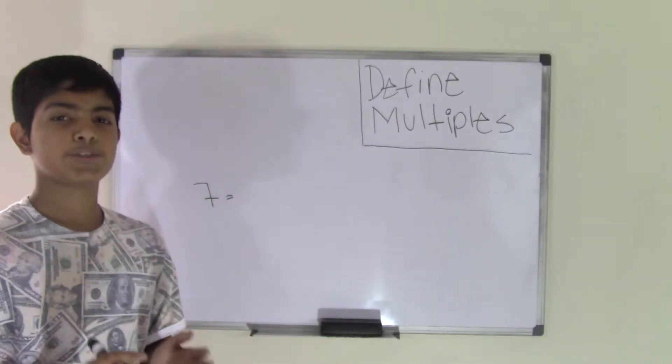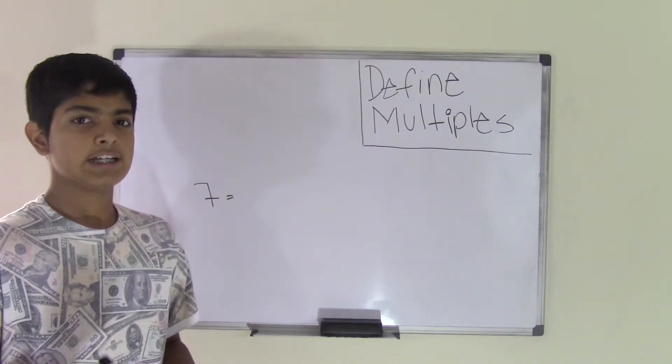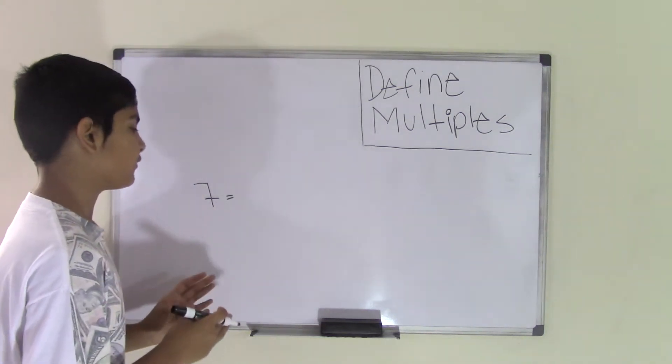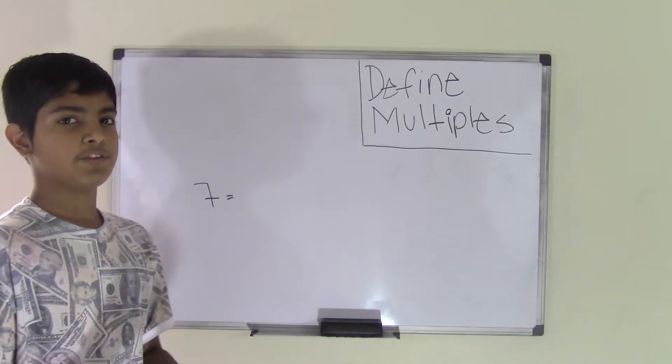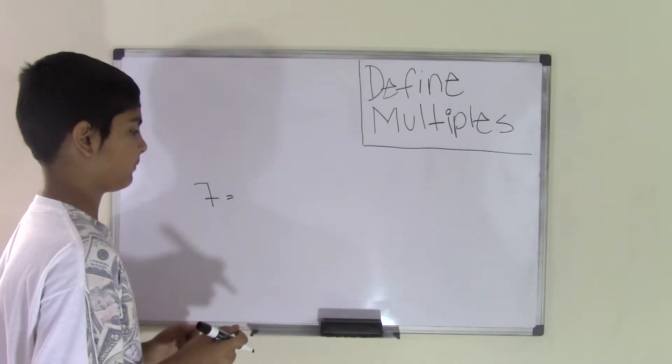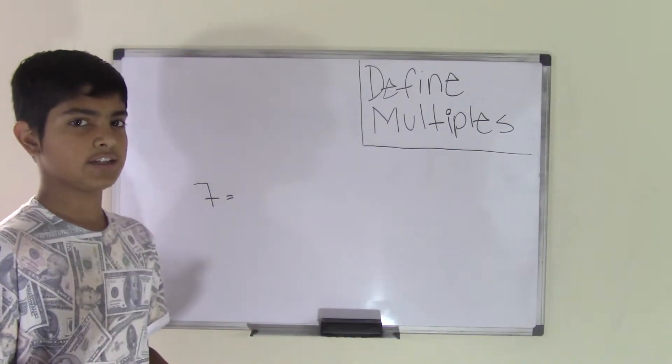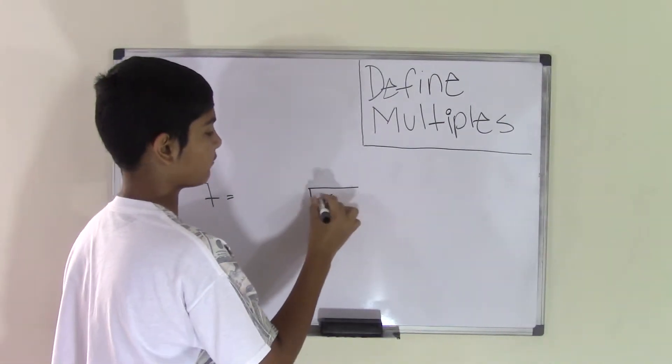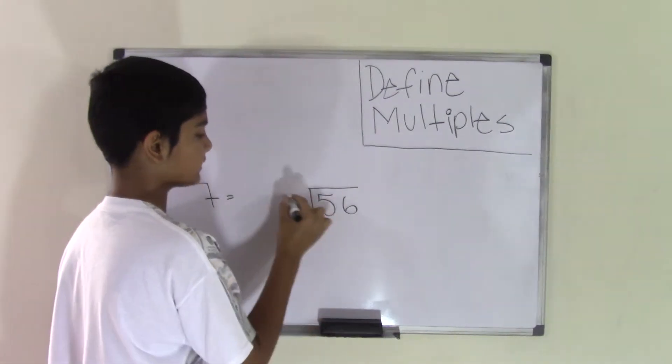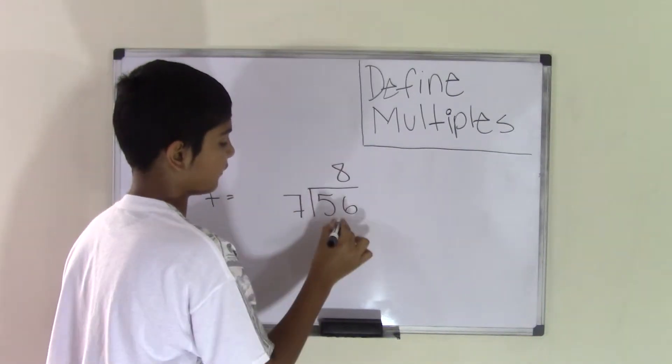Sometimes, you will be asked to find a specific multiple. So, you have the number 7 and they'll tell you to find the multiple 56 of 7. So, what times 7 is equal to 56? Well, let's find out. You can also use division. So, you can divide 56 by 7.